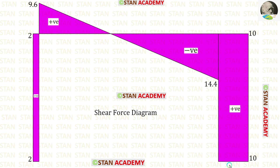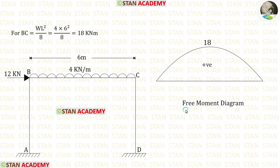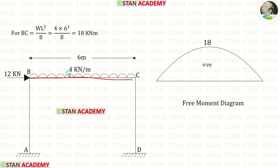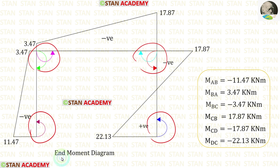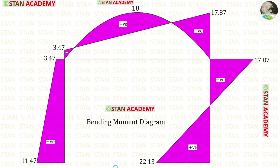In this analysis, we have calculated all of the moments and reactions. Here you can see the shear force diagram. Now let us make the free moment diagram. In the columns there are no loads. In beam BC we have a uniformly distributed load of 4 kN per meter; using the formula WL² upon 8 we get 18. Using the direction of the moments, we can draw the end moment diagram. Then we combine the free moment diagram and the end moment diagram to get the bending moment diagram.